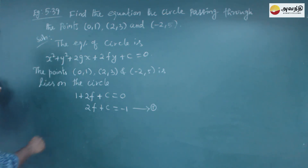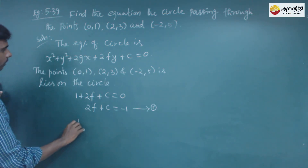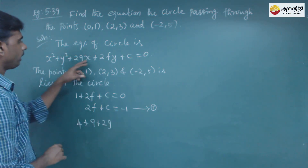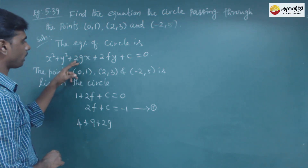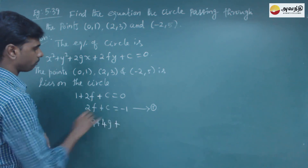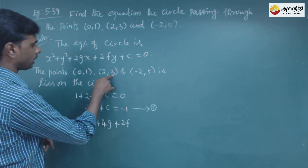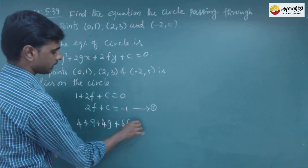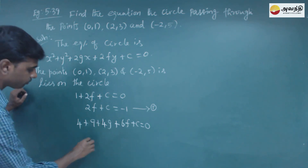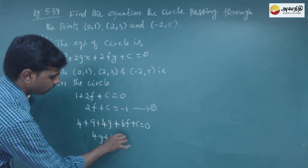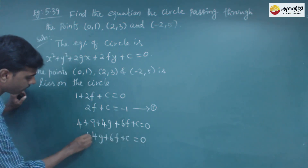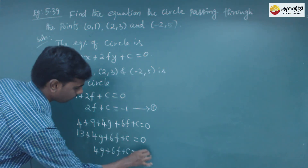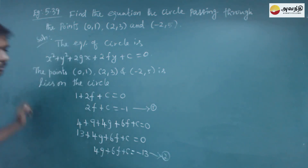Next, we substitute the point (2,3): 2² plus 3² plus 2g(2) plus 2f(3) plus c equals 0. That is 4 plus 9 plus 4g plus 6f plus c equals 0. So 4g plus 6f plus c is equal to minus 13. This is equation number 2.